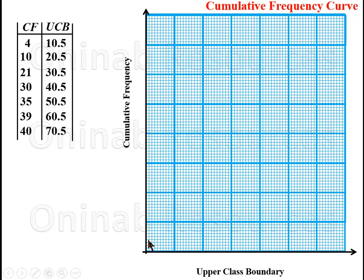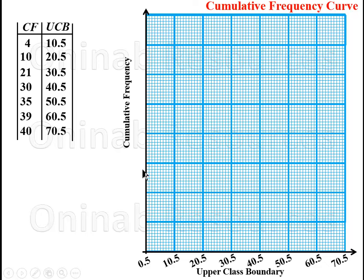Since the cumulative frequency of that preceding interval is 0, we start from 0.5. The horizontal axis values are: 0.5, 10.5, 20.5, 30.5, 40.5, 50.5, 60.5, and 70.5. For the vertical axis we need 40 at the top. Dividing 8 tick lines into 40 gives 5 units per division, so the scale reads 0, 5, 10, 15, 20, 25, 30, 35, and 40.